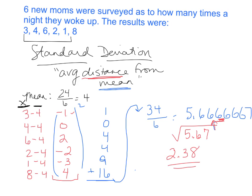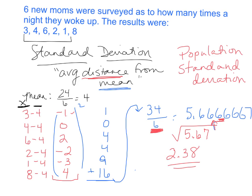I want to talk about symbols. We divided by six because there were six numbers, and you can only do this when the data comes from a population. What we just calculated is the population standard deviation. The symbol for population standard deviation is the lowercase Greek letter sigma — it looks like an O with a little curly Q at the top. It's important that you know that symbol.